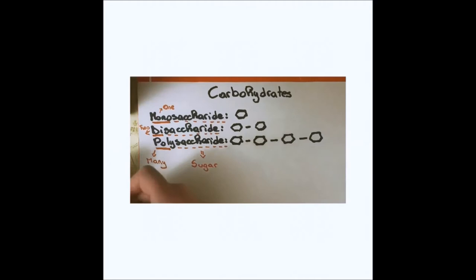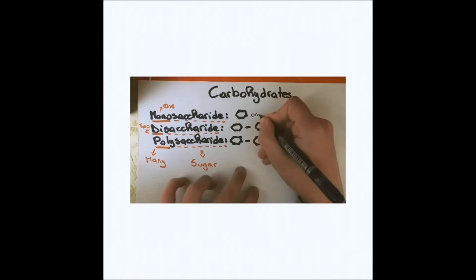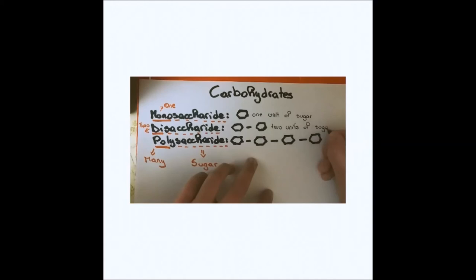So, a monosaccharide is a carbohydrate made of 1 unit of sugar. A disaccharide is a carbohydrate made of 2 units of sugar. And a polysaccharide is made of many sugar units bonded together.